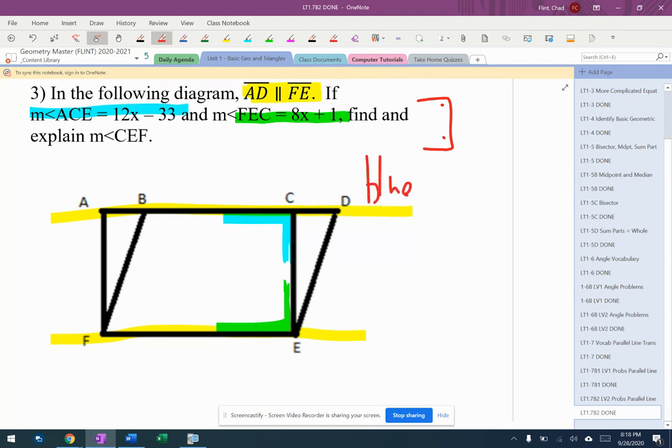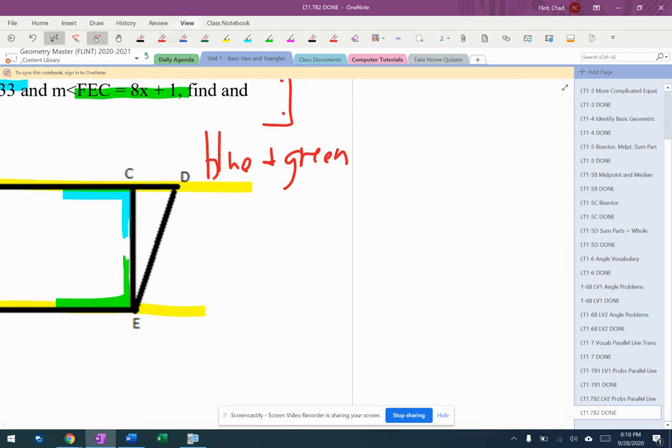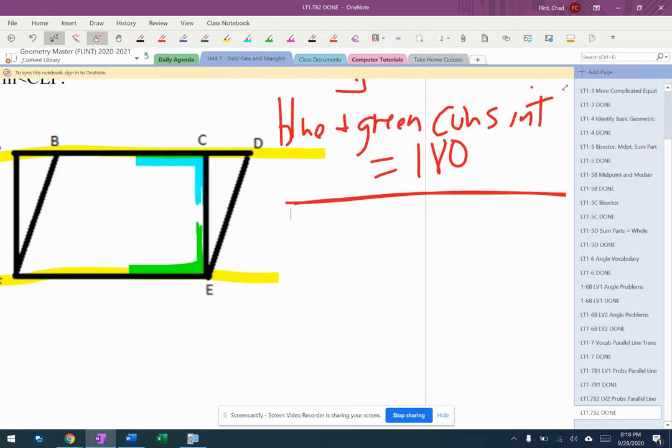So I'm going to write down blue and green are consecutive interior. And whenever they're consecutive interior, that means they equal 180. So the blue and the green are consecutive interior, equal 180.